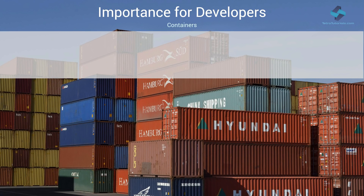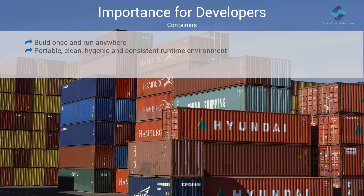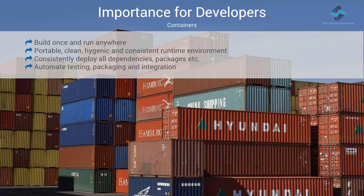How exactly do containers help software developers and engineers? They build and run their code on their local containers and then ship them to be deployed in any target environment without worrying about compatibility issues. Containers also eliminate any chances of other applications polluting the target environment by installing incompatible library versions or misconfiguring global environment variables. Engineers can consistently deploy the exact version of packages needed by their code. Since containers are highly scriptable, developers can automate all the build, packaging, and deployment tasks, making the overall process more reliable, robust, and efficient.